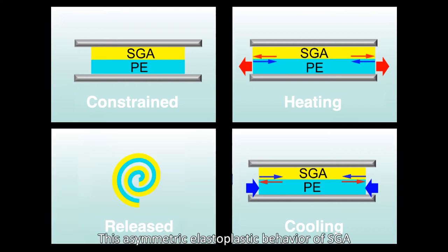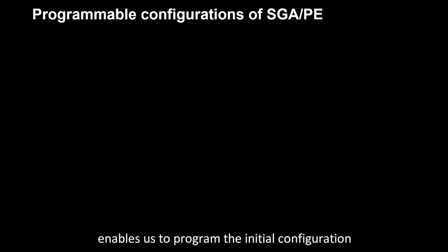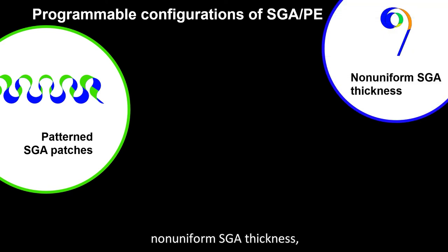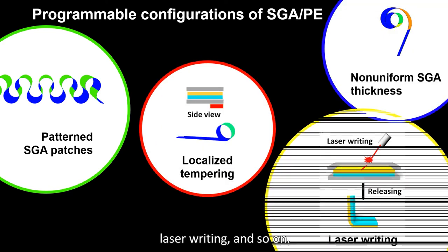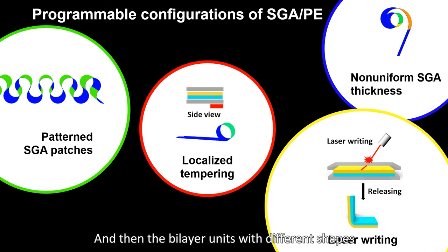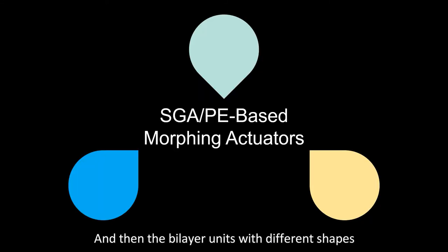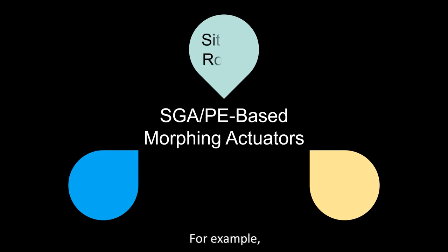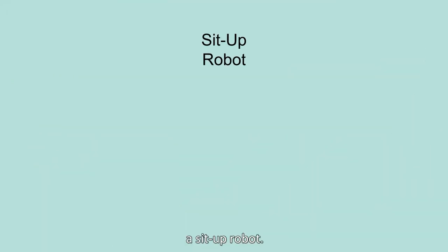This asymmetric elastoplastic behavior of SGA enables us to program the initial configuration of the SGA-PE-based morphing system, like patterned SGA patches, non-uniform SGA thickness, localized tempering, laser writing, and so on. The bilayer units with different shapes can then be assembled to produce more complicated soft actuators, for example, a sit-up robot.